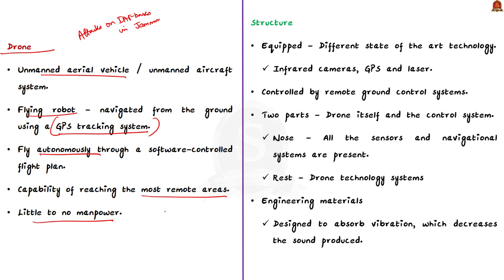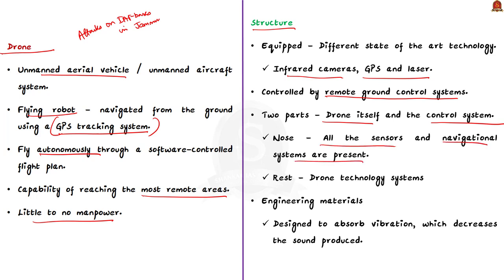Drones are equipped with state-of-the-art technology such as infrared cameras, GPS, and laser, and are controlled by remote ground control systems. An unmanned aerial vehicle system has two parts: the drone itself and the control system. The nose of the UAV is where all sensors and navigational systems are present. The engineering materials used in drones are very lightweight, highly complex composites, also designed to absorb vibrations to decrease sound produced. Applications include attack drones used by the military equipped with weapons for controlled airstrikes — as in the recent terror attack.